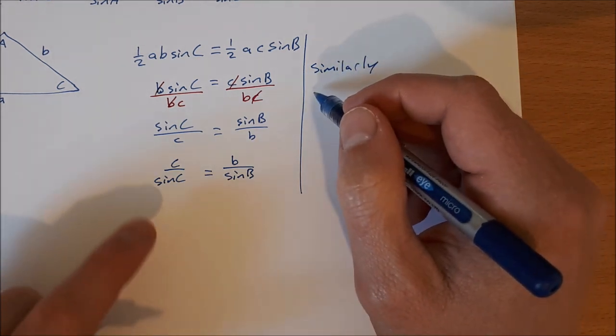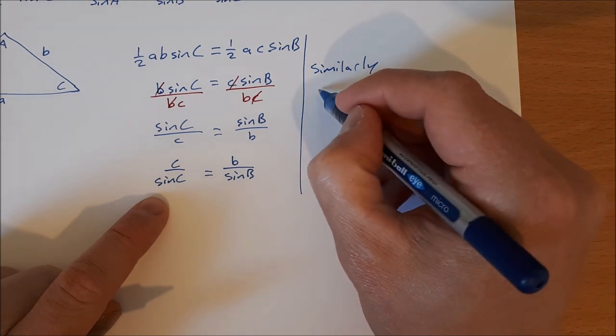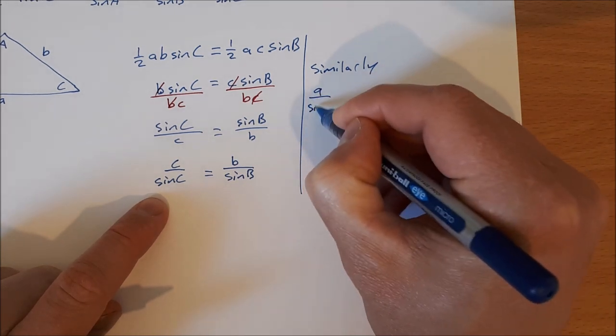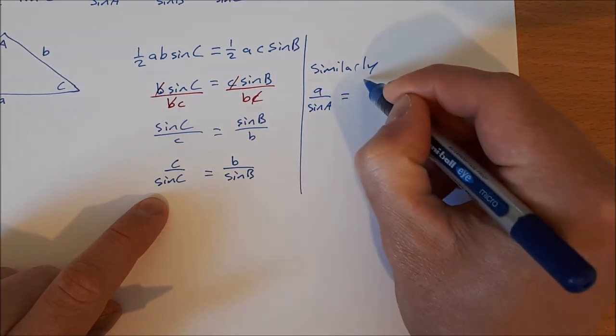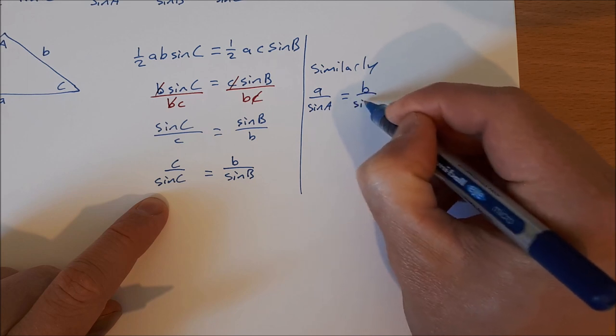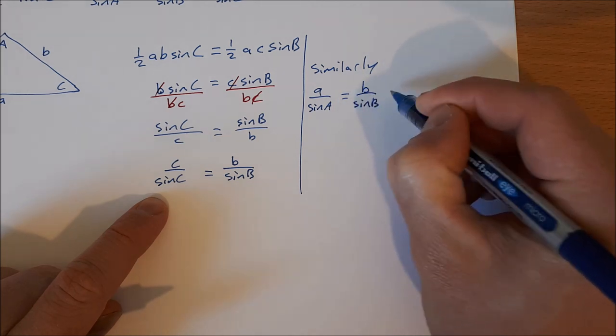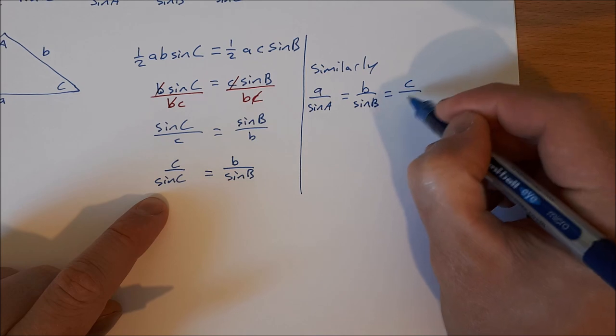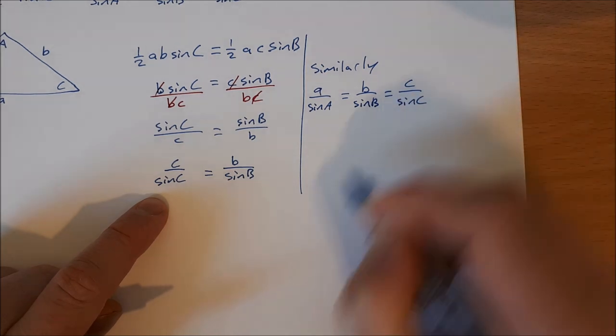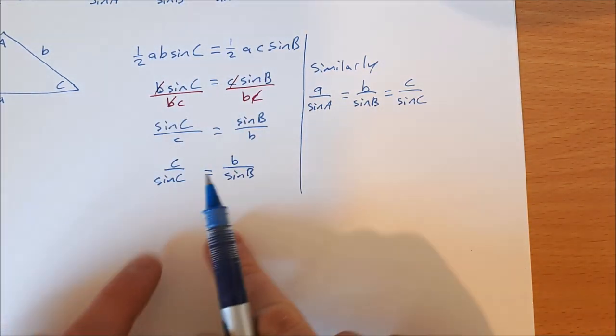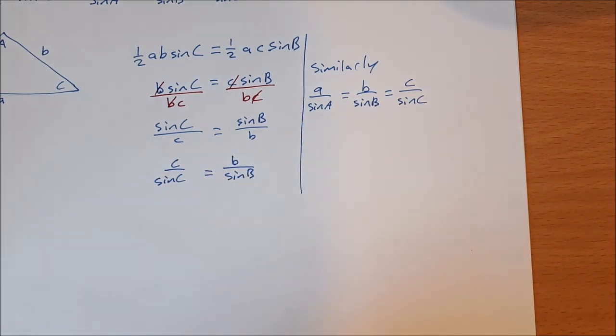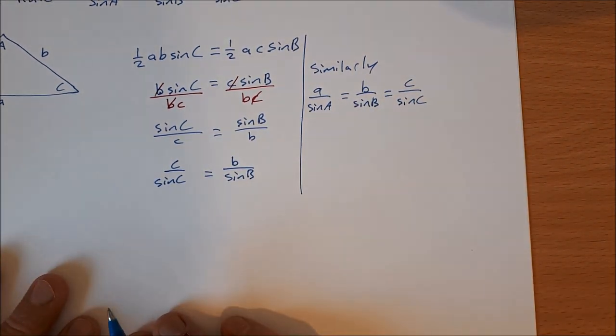And to get it for a, we can say a over sine A is equal to b over sine B is equal to c over sine C. You don't need to go and do this. You'd just be doing the same thing each time. So it's fair enough to say similarly.